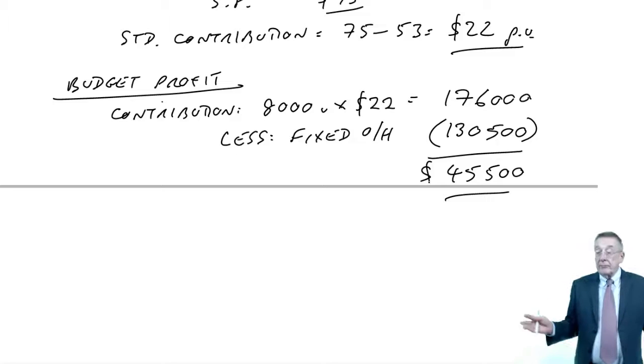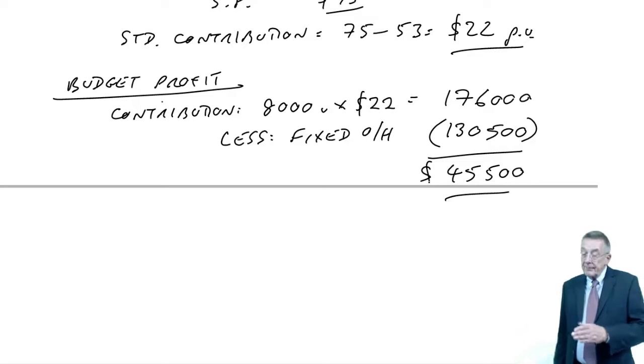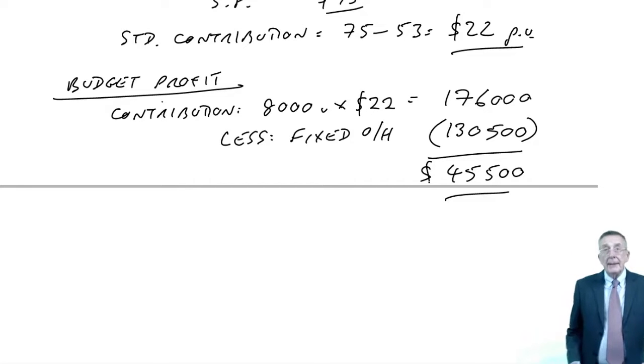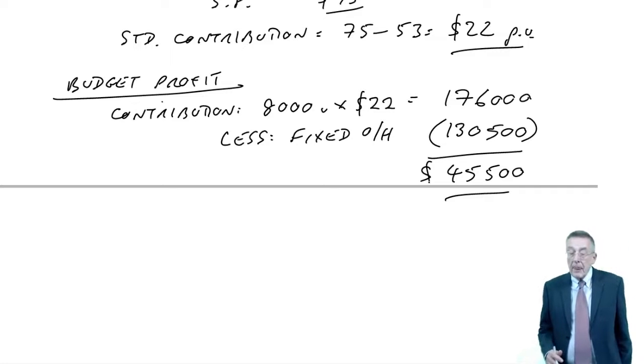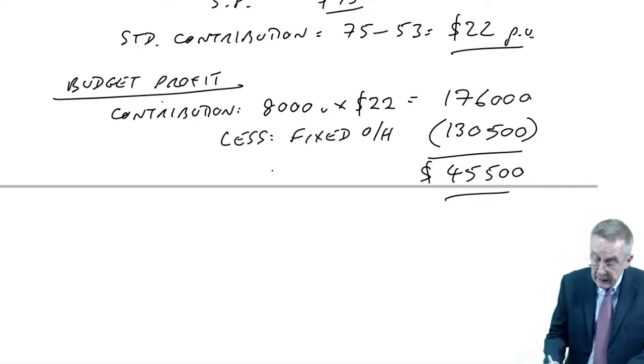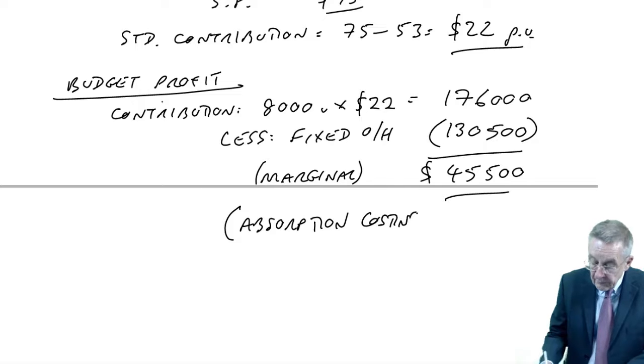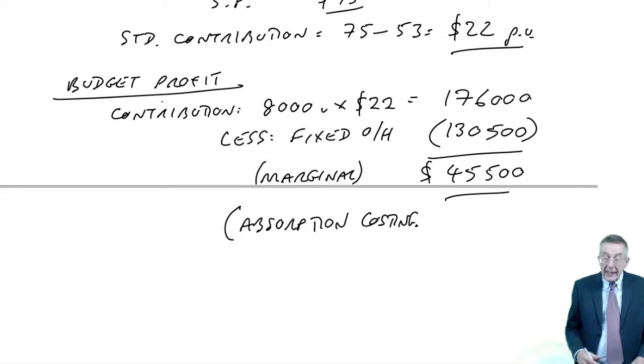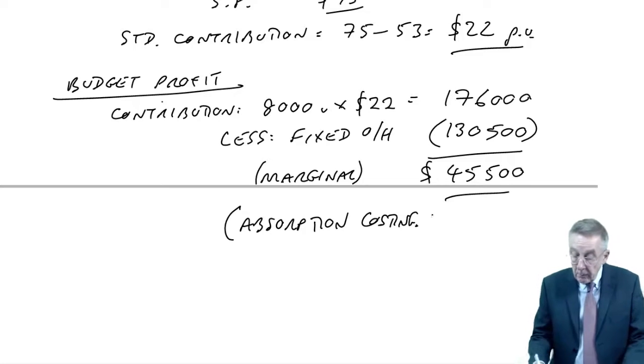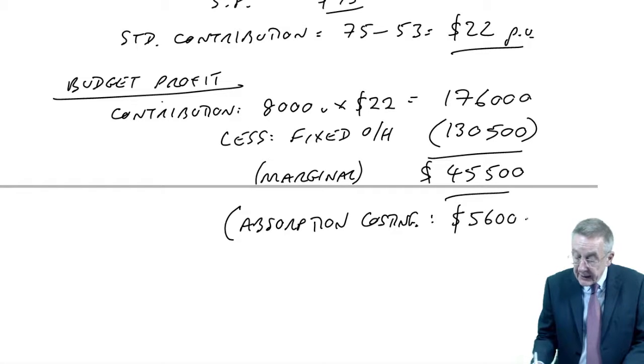I'm not going to produce a full fixed budget and everything. But just one thing before I discuss the variances, one thing that has nothing to do with variances at all, and you should already be happy with from F2, is that the profit there, calculated using marginal costing, is actually different from the profit we got when we were using absorption costing. When we were using absorption costing, we got a budgeted profit of $56,000.